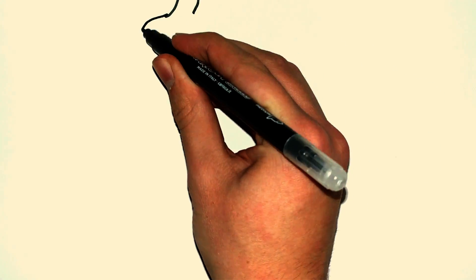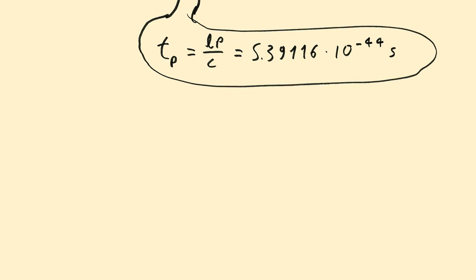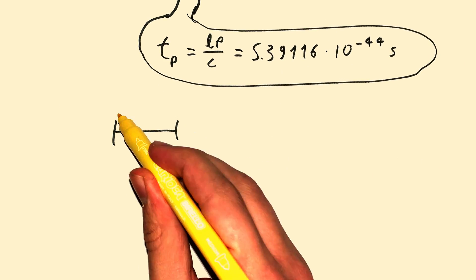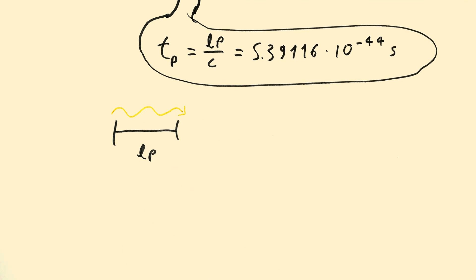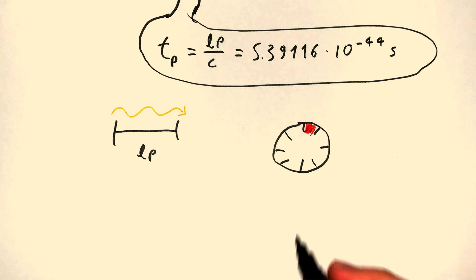And as a product of the Planck length, we get the Planck time, which is the time it takes light to travel that distance, and consequently, Planck time is the smallest time possible. Physics doesn't make sense when time gets shorter than that, and you need G to calculate it.